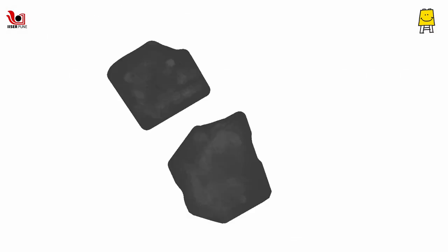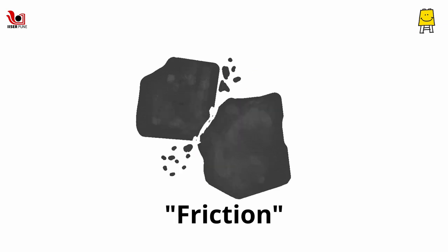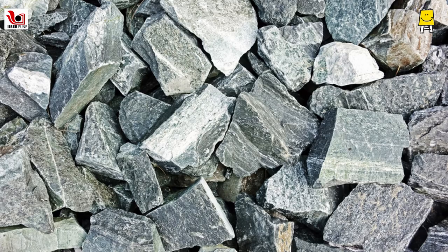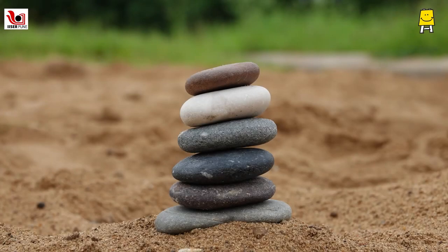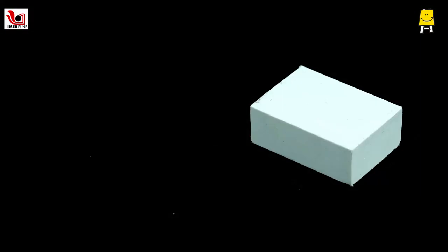When two objects come in contact with each other, friction takes place. Friction plays a major role in turning this irregular rock into a smooth pebble. Let us understand one of these ways with the example of an eraser.